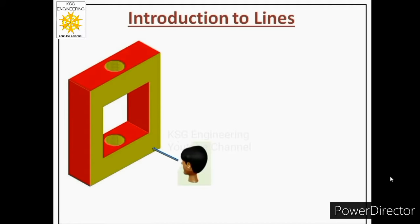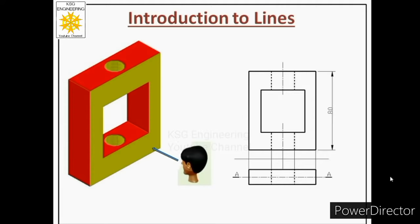Let us take one example to understand this. Suppose we are given one object and we have to draw its front view and top view. In these two views, different types of lines are used, and each line has a specific meaning and function. In this lecture, we will learn about different types of lines commonly used in engineering drawing — their name, construction, and applications.